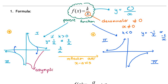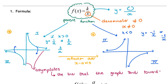Asymptotes can be fairly complicated, but at grade 11 level they're not particularly complicated. In the context of a hyperbola, they are the horizontal and vertical lines that the graph tends towards as x tends to infinity. The horizontal asymptote is the x-axis — as x tends to infinity or negative infinity, the graph tends towards the x-axis.